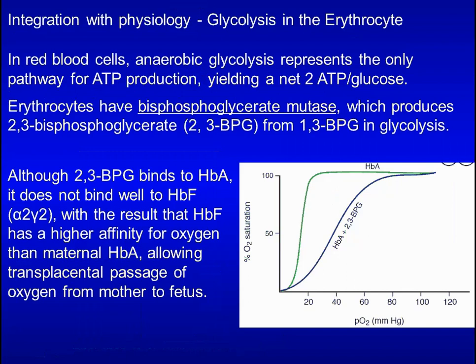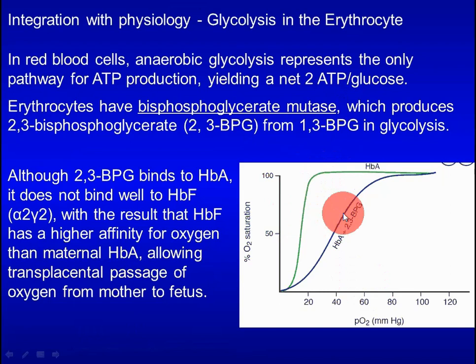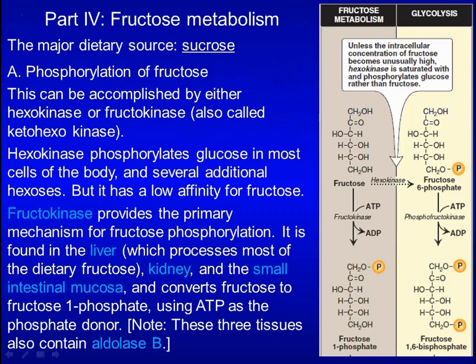Red blood cells have bisphosphoglycerate mutase, which produces 2,3-BPG from 1,3-BPG. 2,3-BPG reduces the affinity of hemoglobin A for oxygen. Addition of 2,3-BPG causes the oxygen binding curve to shift to the right. 2,3-BPG binds hemoglobin A more tightly than hemoglobin F. As a result, hemoglobin F has a higher affinity for oxygen than hemoglobin A.